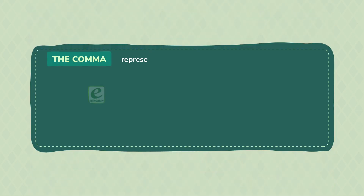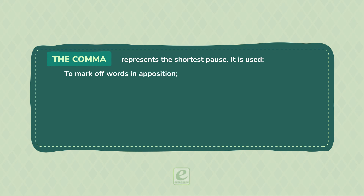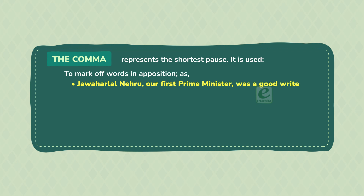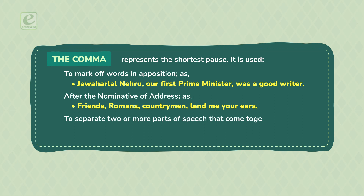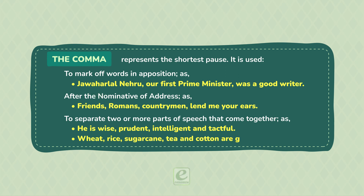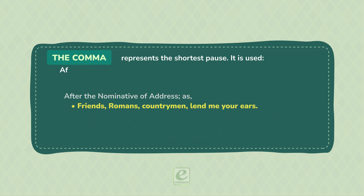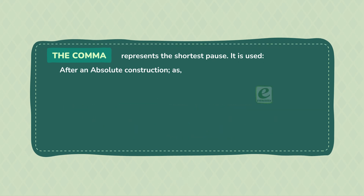The comma represents the shortest pause. It is used to mark off words in apposition, as: 'Jawaharlal Nehru, our first Prime Minister, was a good writer.' After the nominative of address, as: 'Friends, Romans, countrymen, lend me your ears.' To separate two or more parts of speech that come together, as: 'He is wise, prudent, intelligent and tactful.' 'Wheat, rice, sugarcane, tea and cotton are grown in India.' After an absolute construction, as: 'The sun having set, we all returned home.'